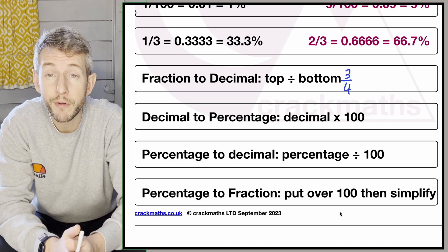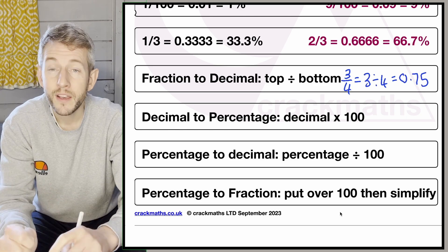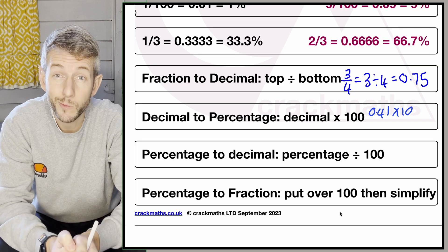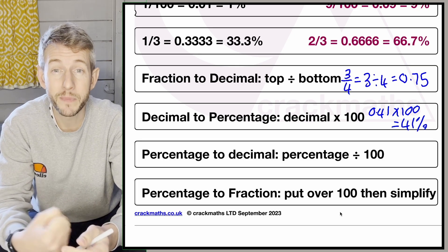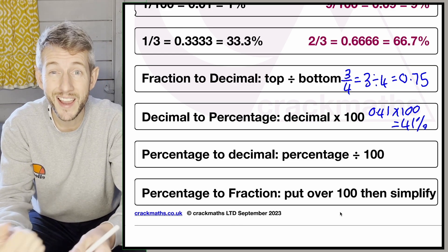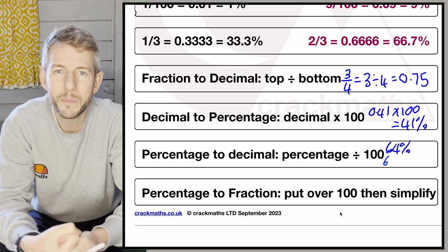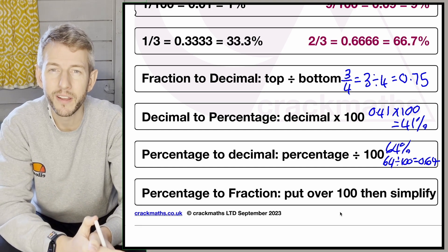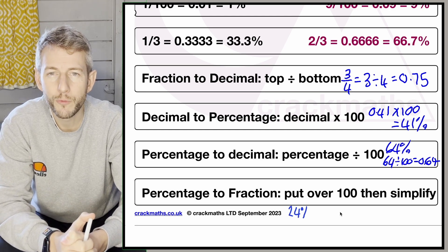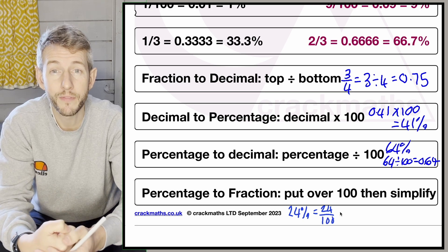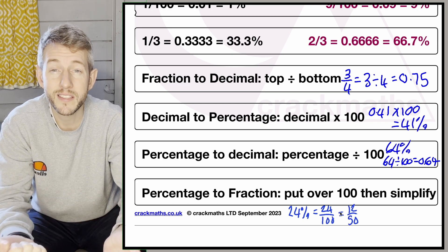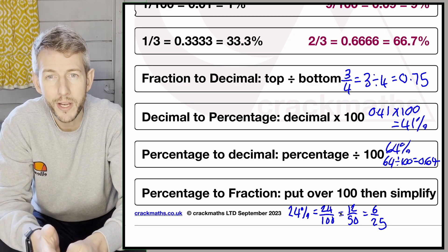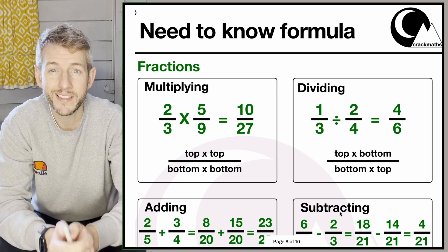To convert fraction to decimal, divide the top by the bottom — for example, 3 over 4 is 3 divided by 4, which equals 0.75. To convert decimal to percentage, multiply by 100 — so 0.41 times 100 equals 41%. To convert percentage to decimal, divide by 100 — so 64 divided by 100 equals 0.64. To convert percentage to fraction, put it over 100 and simplify — for example, 24% becomes 24 over 100, then 12 over 50, then 6 over 25 in its simplest form.